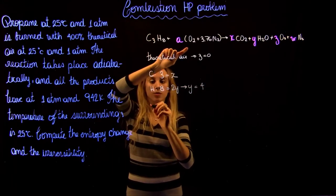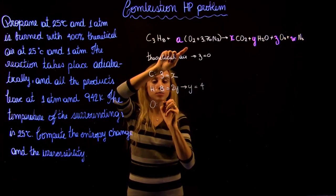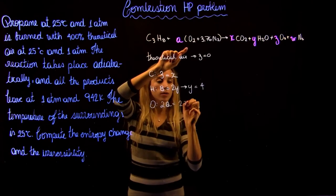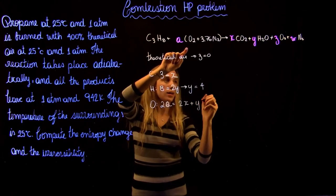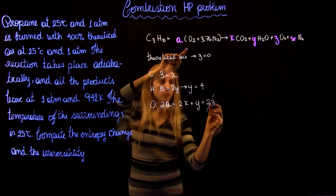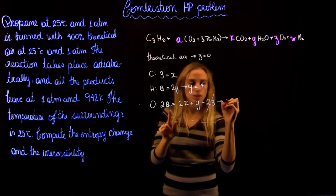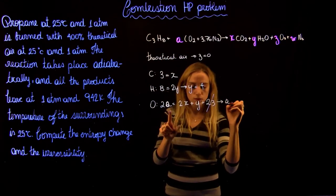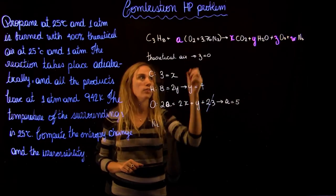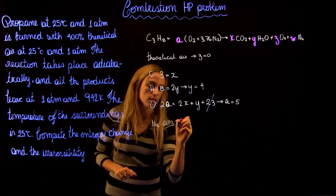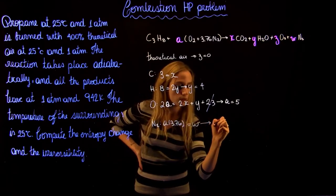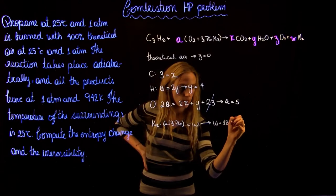Then for O, oxygen, it's going to be 2A equals to 2X plus Y. And then we will have 2Z, but we say this is going to be zero. And then we're going to find a value of A of 5. Then for nitrogen, we're going to have A times 3.76 equals to W, and we're going to find a value of W of 18.8.